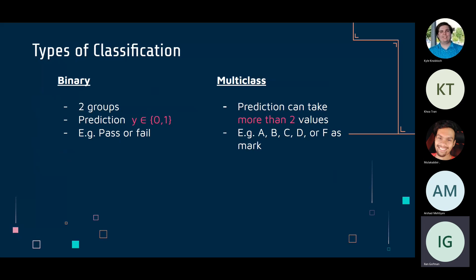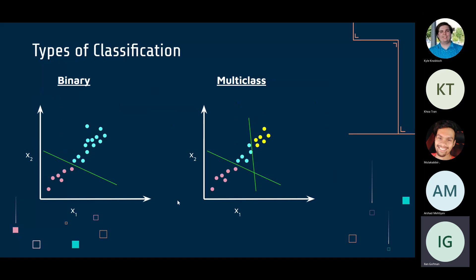For binary classification we want to find one linear decision boundary to separate two classes. For multi-class classification we use multiple lines to separate each class from the others.